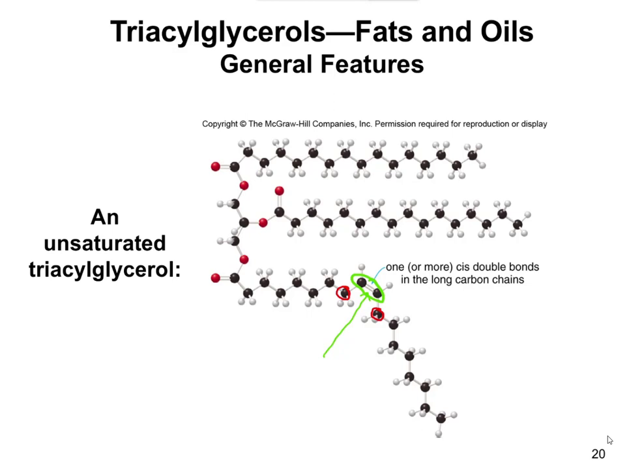This would be an unsaturated fat — you can see this one has only one double bond, though sometimes you'll see double bonds in the other chains as well. In terms of what you need to know: if you see any double bonds at all, think of that as an unsaturated fat derived from a vegetable oil.